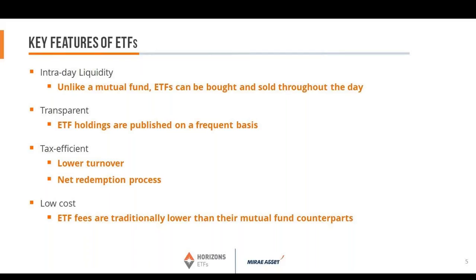With an ETF, the market maker creates units with the ETF company and sells them in the marketplace. When they run out, they create more and sell those. If they start buying them back because demand is low, they can hold them — for one day or ten years — in anticipation of selling again. So whereas a mutual fund unit is created for you and destroyed after you're done, an ETF unit created for the market maker can be bought and sold five times, fifty times, five hundred times, or five thousand times before it's redeemed. This reduces the net redemption process, meaning less taxable liability within the portfolio.